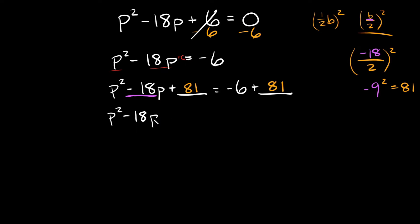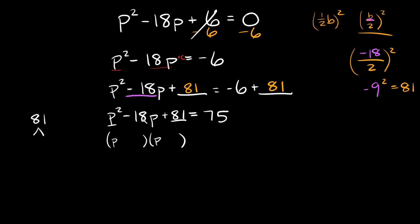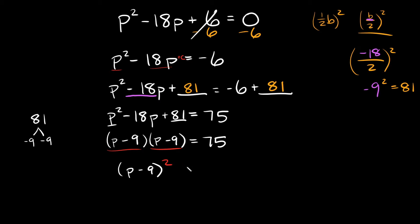Simplifying: p² - 18p + 81 = -6 + 81 = 75. Now we have our perfect square trinomial. Factoring: two numbers that multiply to 81 and add to -18 are -9 and -9. So we get (p-9)(p-9) = 75, which rewrites as (p-9)² = 75.